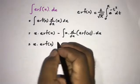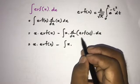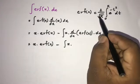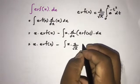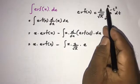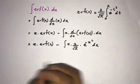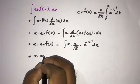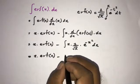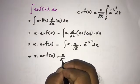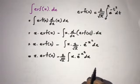So we have x times erf(x) minus the derivative of erf(x). Taking the derivative, differentiation and integration cancel, giving us 2 over square root of pi times e to the minus x squared. So we write x times erf(x) minus 2 over square root of pi, taken outside as a constant, times the integral of x times e to the minus x squared dx.